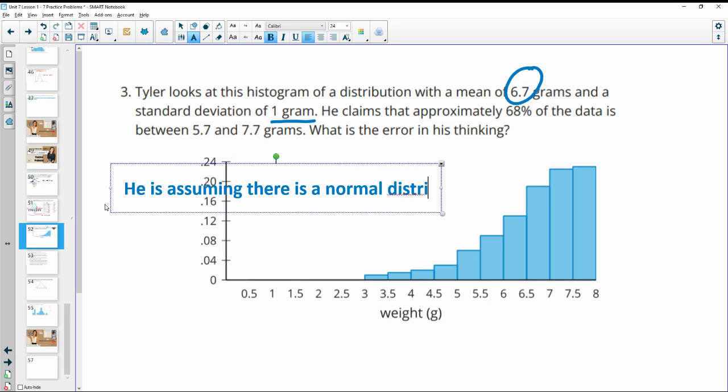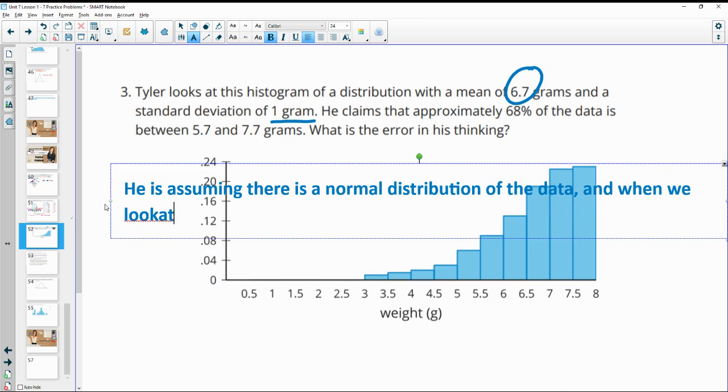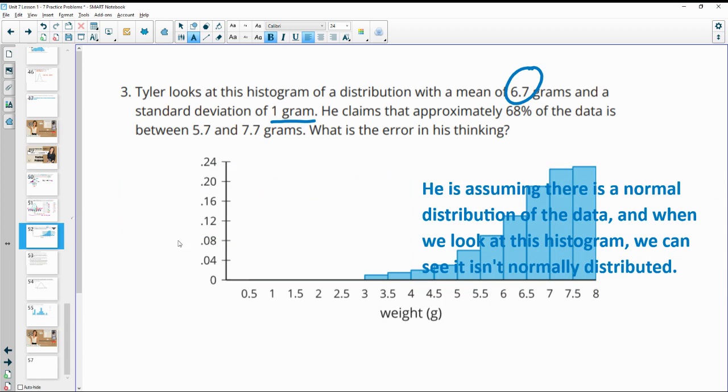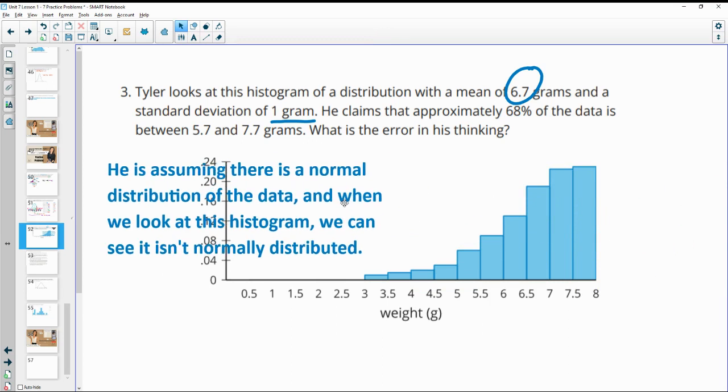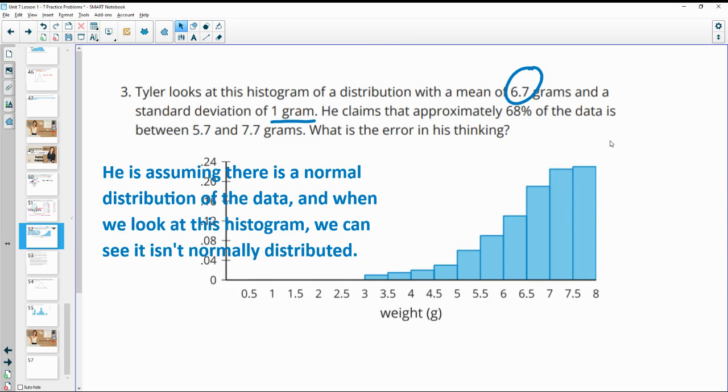And when we look at this histogram, we can see it isn't normally distributed. So a normal distribution has kind of that bell curve that I was drawing in the other ones. And this data does not. This is like way off to the side.